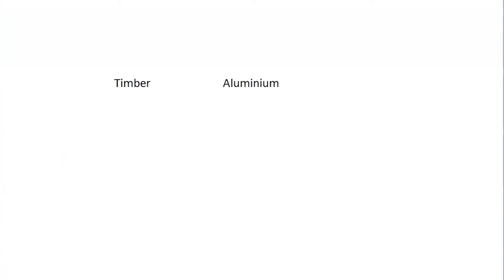Hello. Today we are looking at the materials used in the construction of windows and doors. We're going to break this down into three main materials, probably the most common ones used. The first is timber, we're going to look at aluminium, and we'll also talk a little bit about PVC windows.